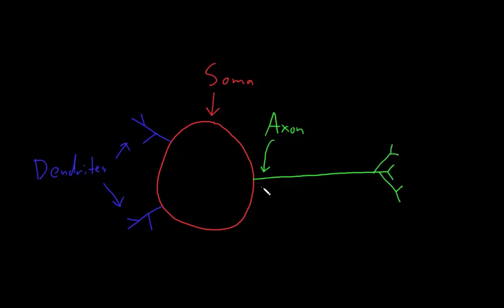The first part of the axon is called the axon initial segment, or it's also called the trigger zone. And we'll get into the reason for that in the next video.